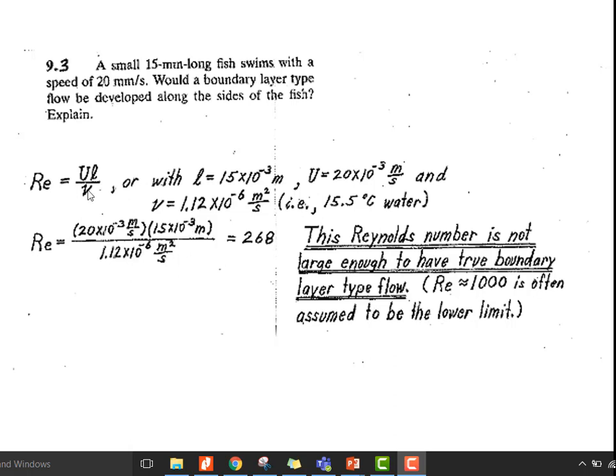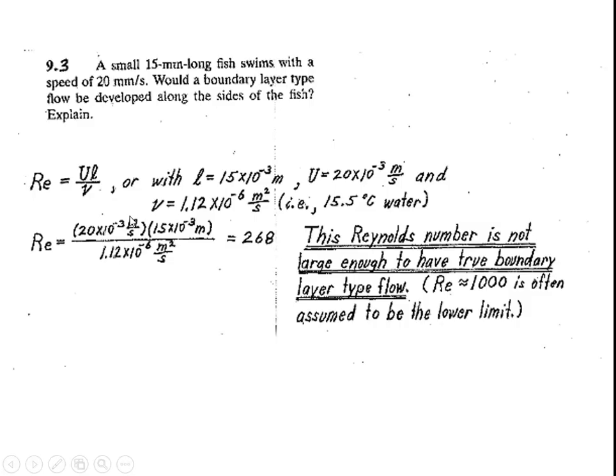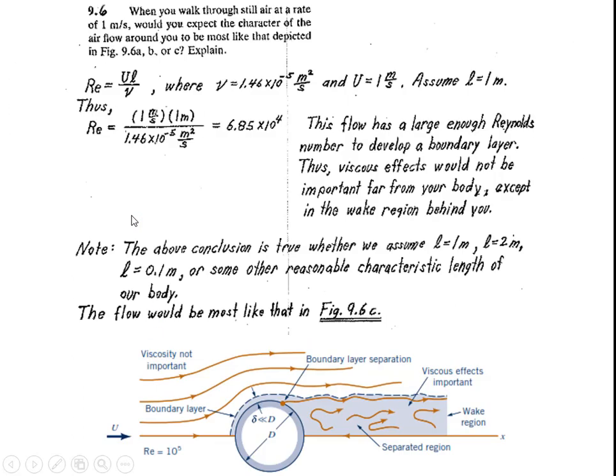Let's see another problem, 9.6: When you walk through still air at a rate of 1 meter per second, would you expect the character of the air flow around you to be most like that depicted in Figure 9.6a, b, or c? These are the figures which we discussed in lectures with the cylinder.